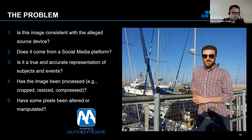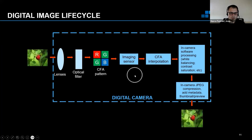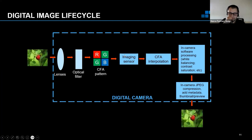Before the demo, here's a very simplified model of the digital image life cycle. We have the actual scene on the left. A digital camera — which could be a smartphone — captures light through a lens and an optical filter that removes infrared light. The imaging sensor uses a CFA color filter array pattern because it can only count photons, not capture color. Different colors are captured in different pixels and then interpolated to get a full color image. This still applies to modern smartphones.